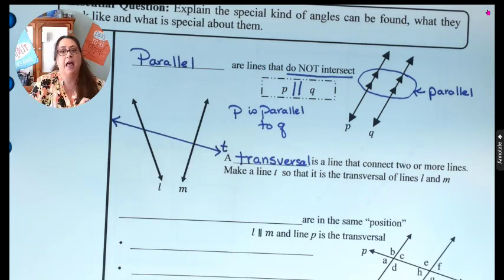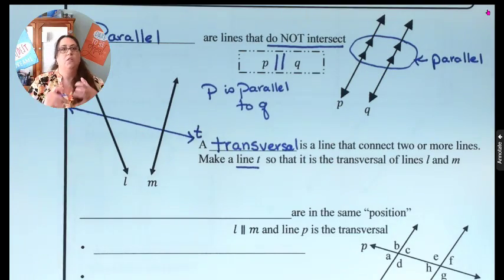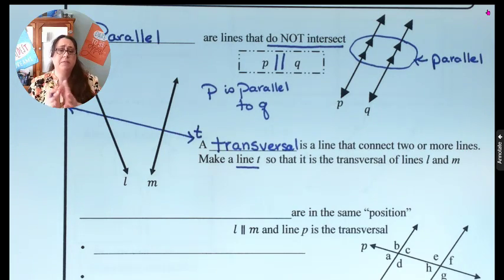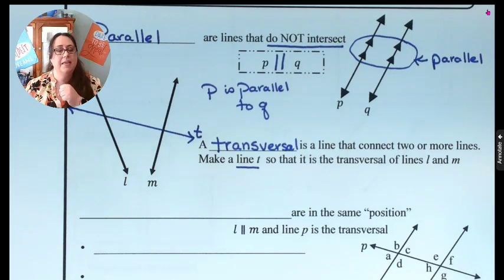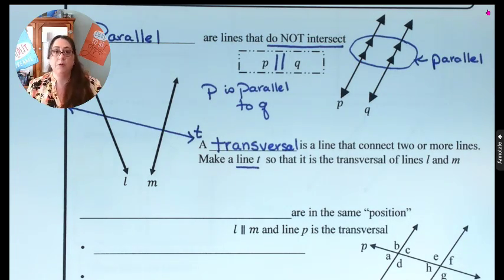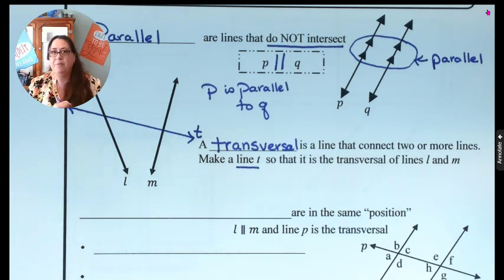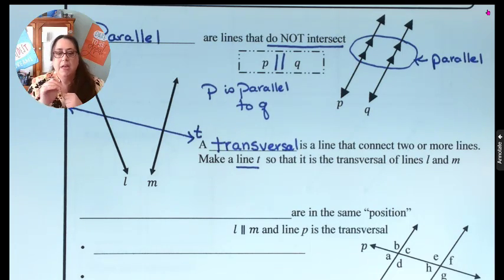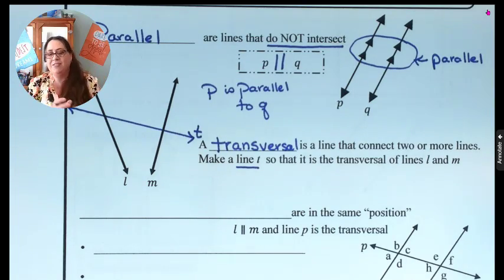Those two together — a parallel line and a transversal line — once we put them together, we start having connections with the different angles they make. Some really cool things start happening: we get congruent angles, and later you'll hear about supplementary angles. But congruent angles is where we're going to focus today, and finding those.